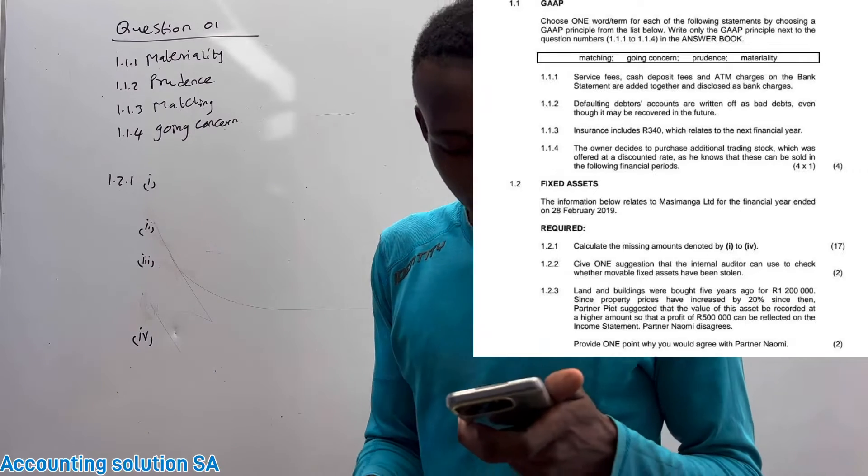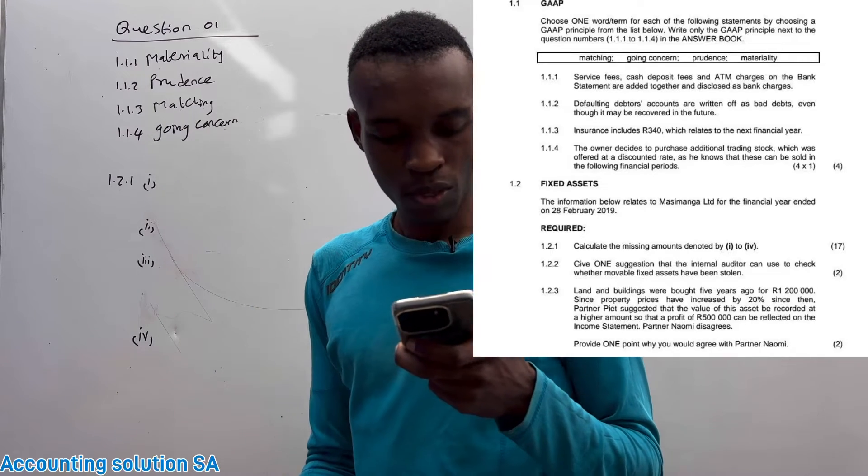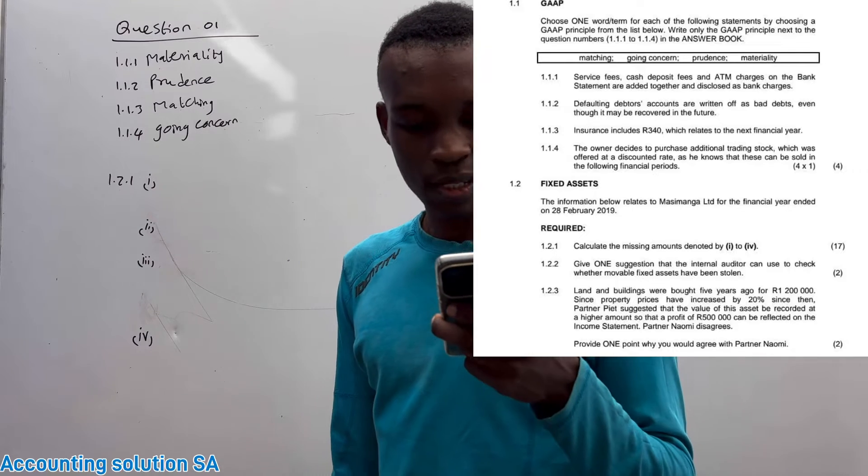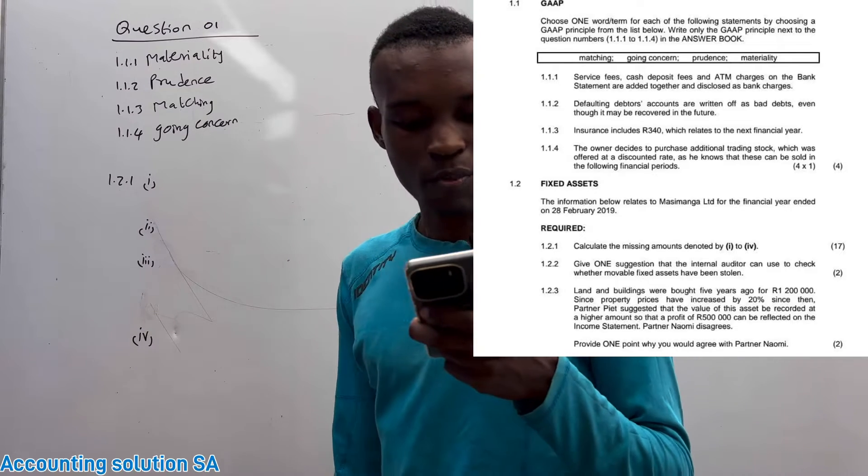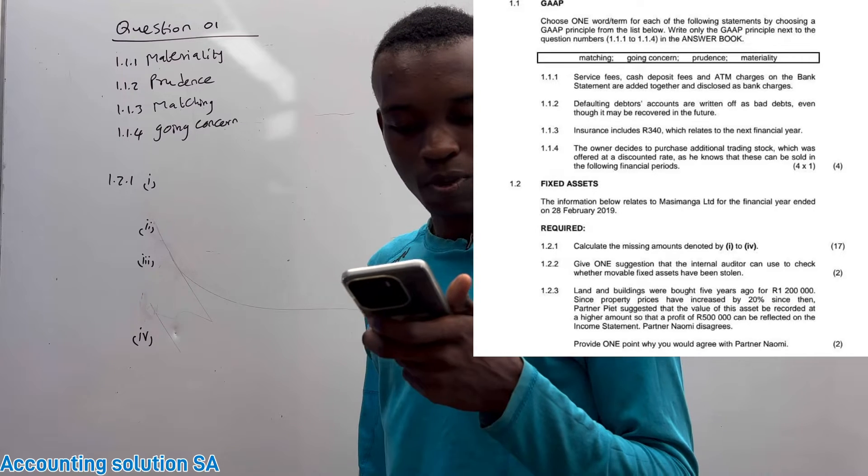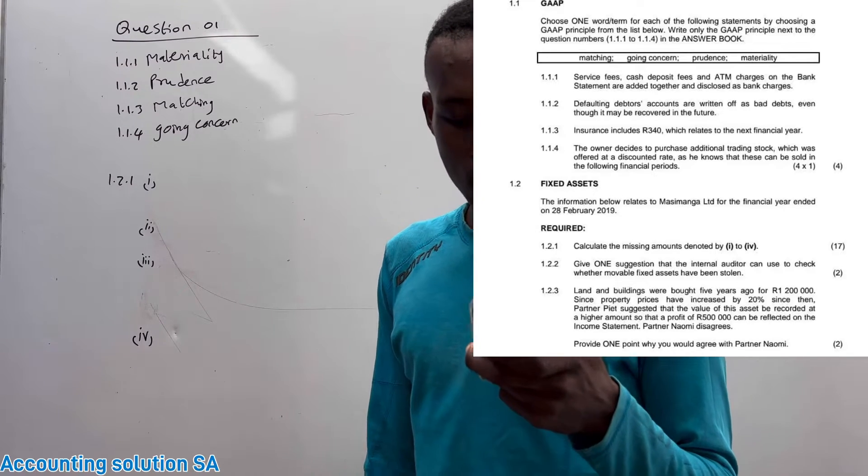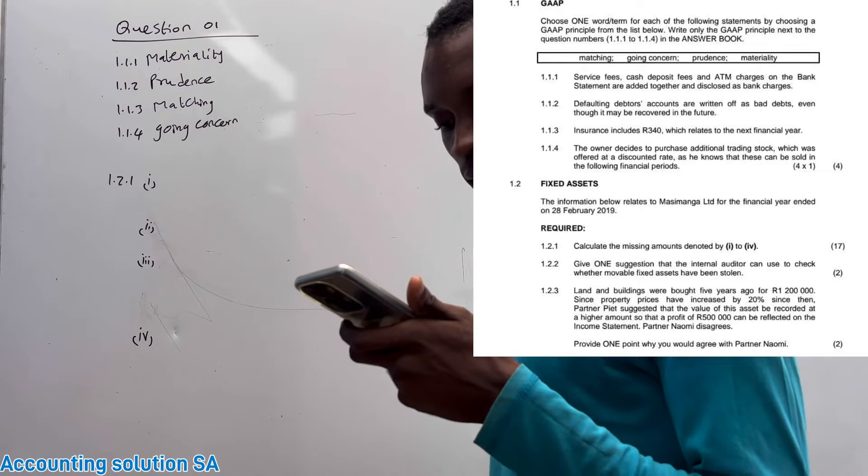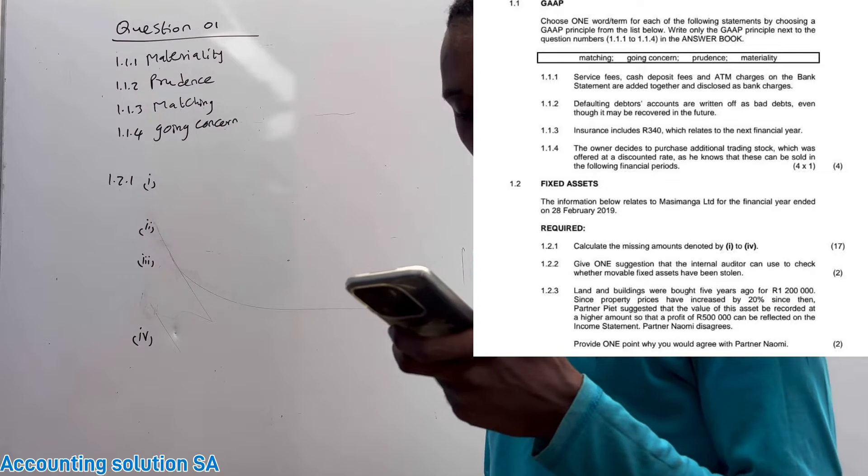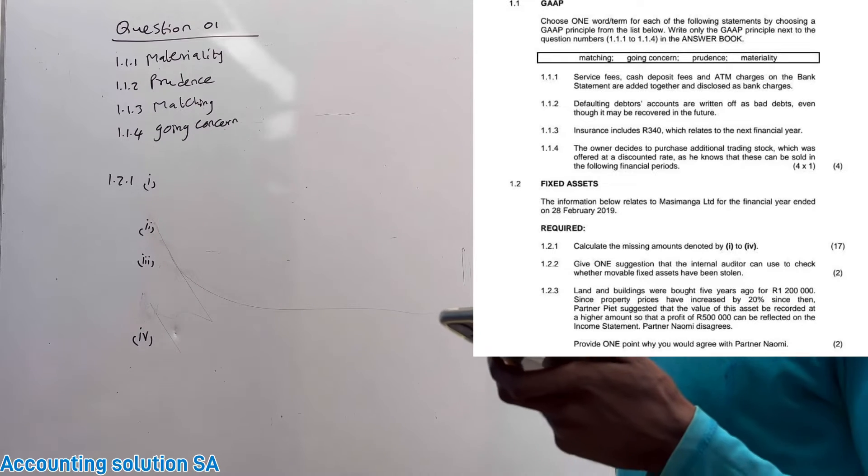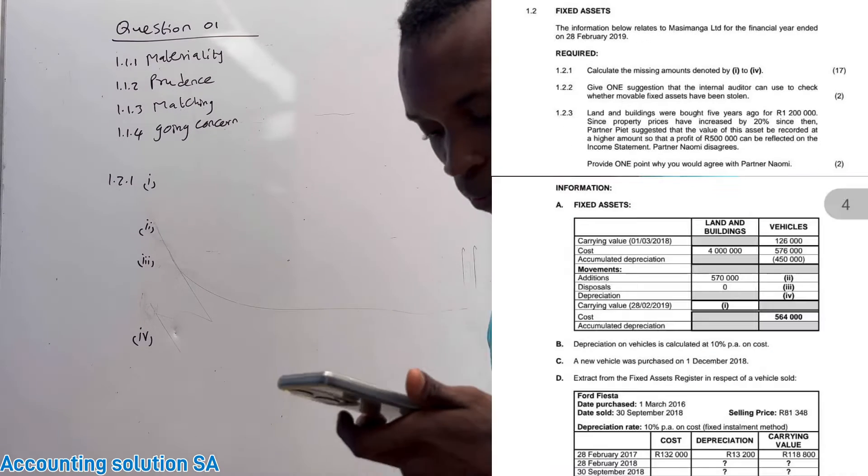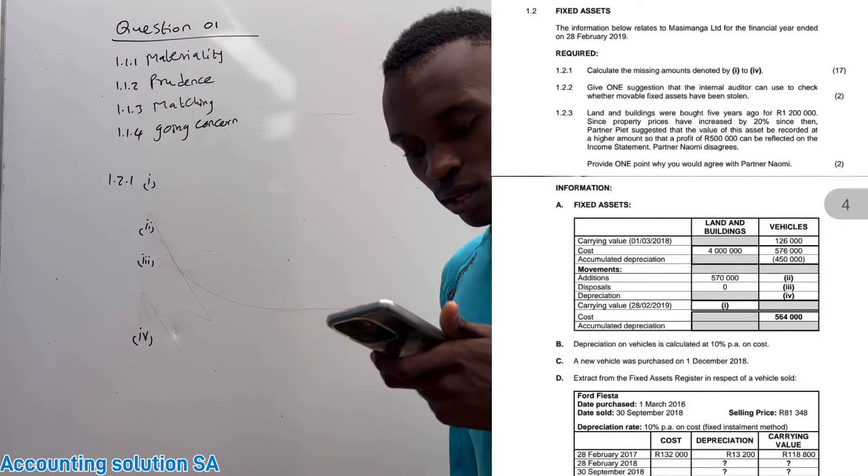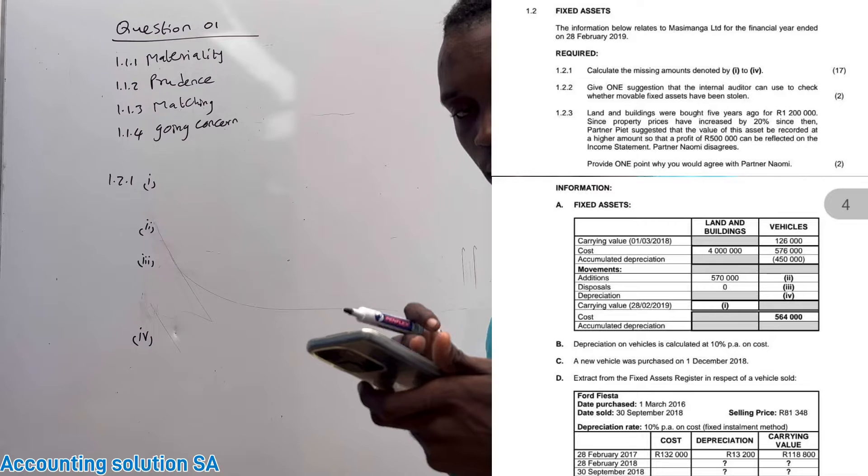Fixed asset notes. The information below is related to Malanga Ltd for the financial year ending February 2019. Question 1.2.1 - apologize guys, I'm reading the wrong question here. Calculate the missing amounts denoted by 1 to 5, 17 marks. This is the one that we are going to do.